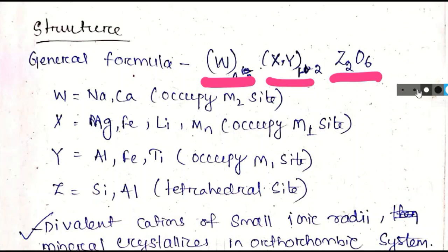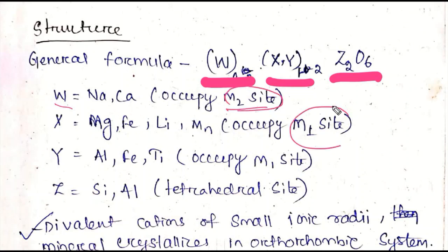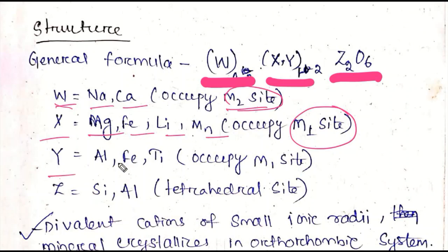In the general formula: X includes Mg, Fe, Li, Mn; Y includes Al, Fe, Ti; and Z includes Si and Al. These represent the different cation sites in the pyroxene structure.